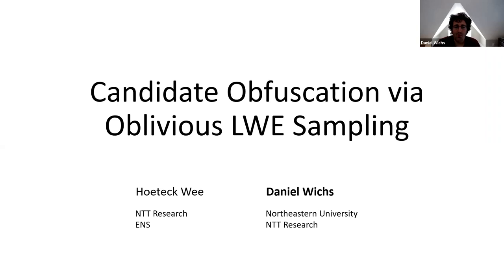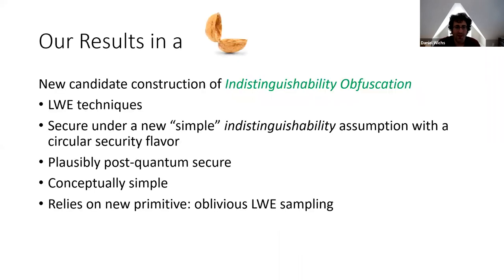My name is Daniel Wicks and I'm going to tell you about a new candidate construction of indistinguishable obfuscation via oblivious LWE sampling. This is joint work with HopTechWe. We give a new candidate construction of IO relying on learning with errors style techniques, but we are unable to show security under the LWE assumption on its own. Instead, we formulate a new simple indistinguishable-based assumption with a circular security flavor. The construction is plausibly post-quantum secure and conceptually simple. It relies on a new primitive called oblivious LWE sampling, which implies IO under standard LWE.